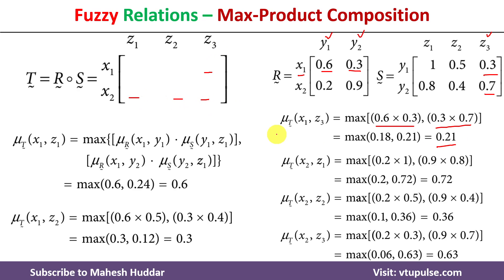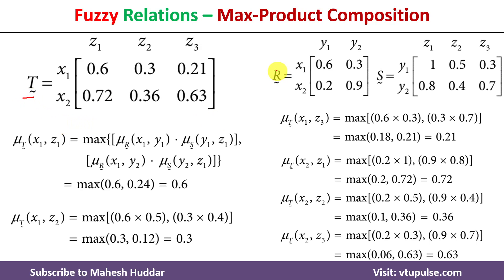The remaining membership values for max-product composition are 0.72, 0.36, and 0.63. The final fuzzy relation T after max-product composition between R and S is now complete. This is how we perform max-min and max-product composition on given fuzzy relations to obtain a new fuzzy relation. I hope the concept is clear. If you liked the video, please like, share, subscribe, and press the bell icon for regular updates. Thank you for watching.